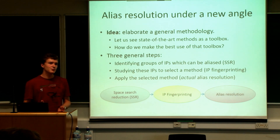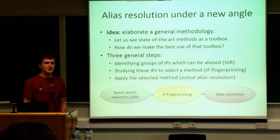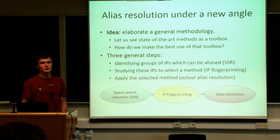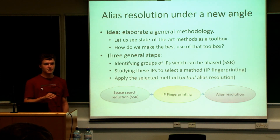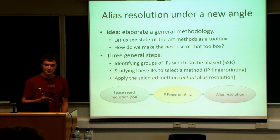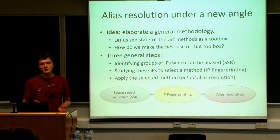What we are discussing today is a general methodology to combine all these techniques together. The idea is that we have a toolbox of state-of-the-art techniques and we want to make the best use of that toolbox. We elaborated a methodology made of three major steps: first, identifying close IPs in a target domain to determine if they can be aliased together — that is the space search reduction. Second, studying these individual IPs to fingerprint them and select the best method — that is IP fingerprinting. Third, applying the selected method — the actual alias resolution.